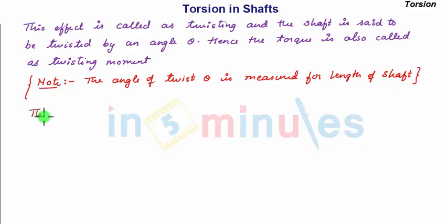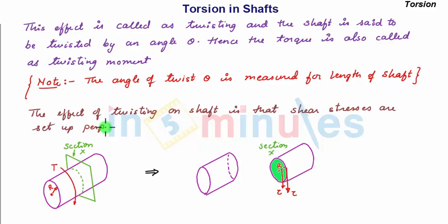The effect of twisting on shaft is that shear stresses are set up perpendicular to radius on all transverse cross section. So for a shaft of radius r subjected to torque T, the effect is such that on any of the transverse cross section as shown by section X, there will be shear stresses tau induced.